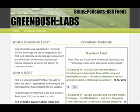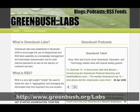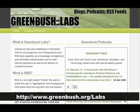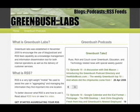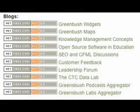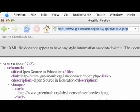Now that we have our new group set up, let's go to the Greenbush Labs site. As I mentioned, Labs is an all-things RSS directory located at www.greenbush.org/labs. When we are there, scroll down and we will see the blogs section. We will be subscribing to a blog called Open Source Software and Education Blog. Let's click the orange RSS button next to the Open Source Software and Education text.